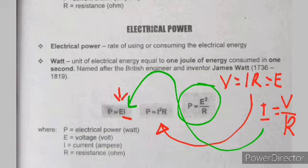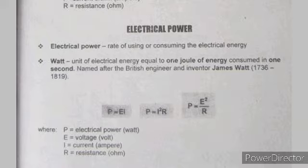The variables are: P equals electrical power, and E, I, R are the same as in Ohm's Law.